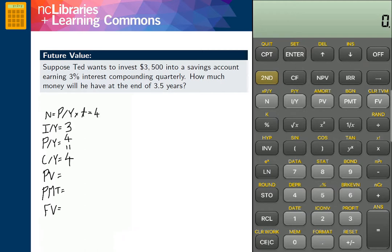Now we are ready to compute N, taking 4 times 3.5, which is equal to 14.